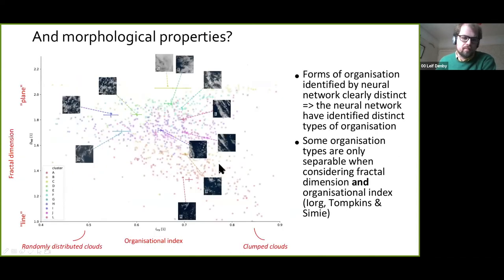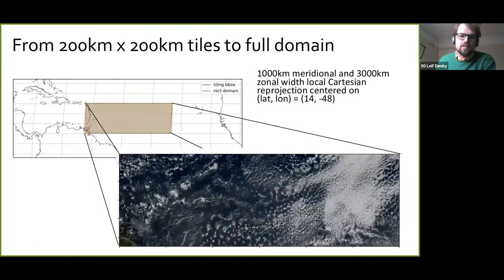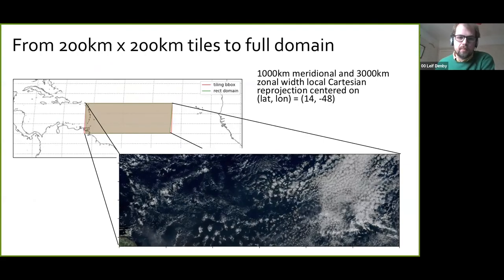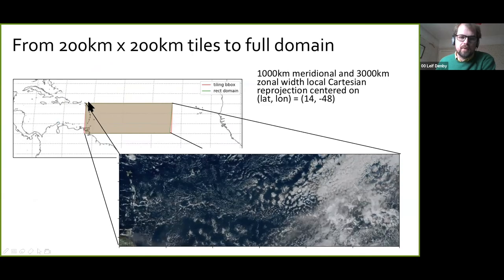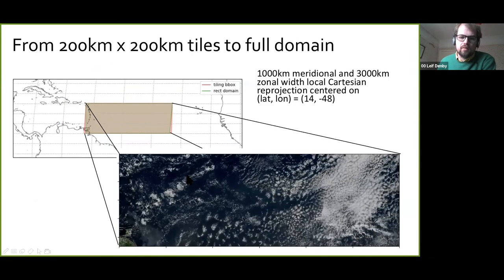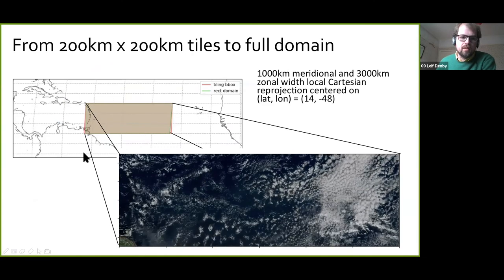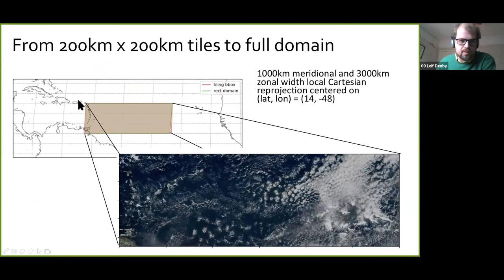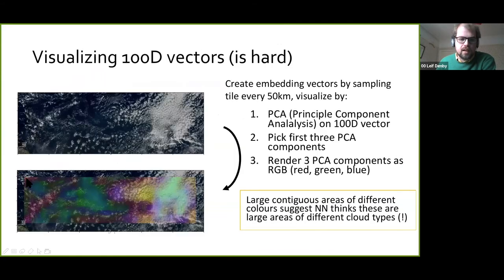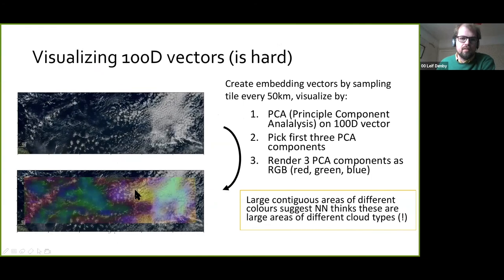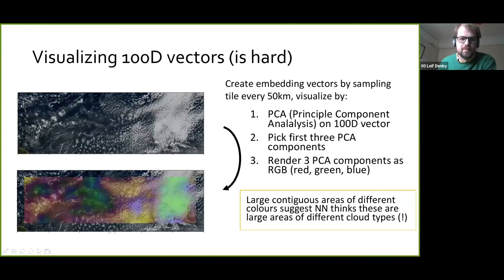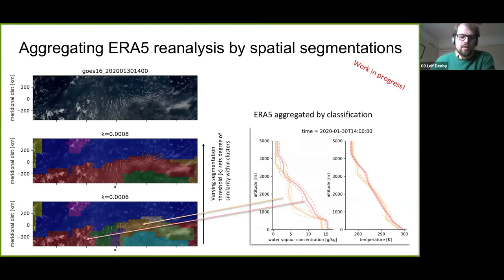Now I have a way of finding out what kind of cloud patterns form, and I can study their related properties, how they separate, and look at morphological properties like fractal dimension and organizational index. I'm using this for the whole domain, scanning and feeding in tiles across the whole domain and looking at what kind of cloud patterns the neural network outputs.